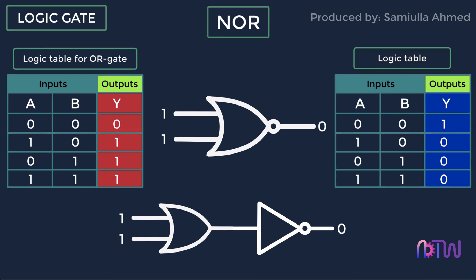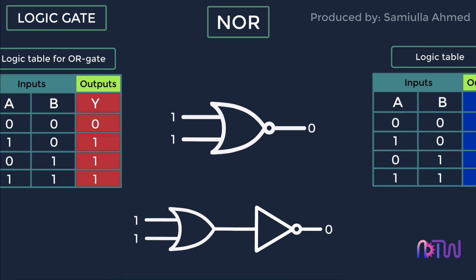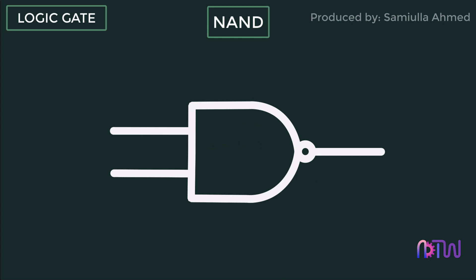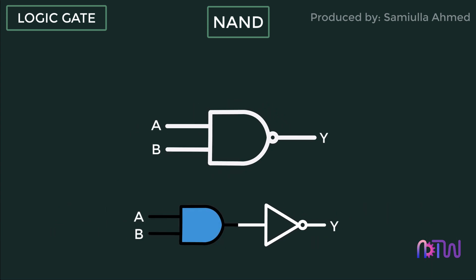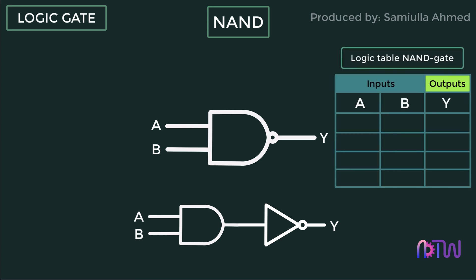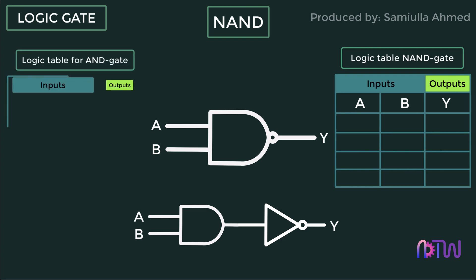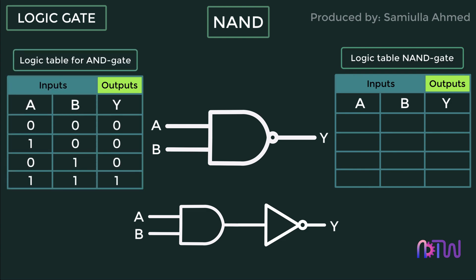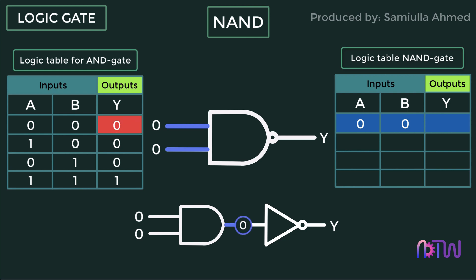Let's move on to the NAND gate. Just as the OR gate's output is passed through the NOT gate to get the opposite results, the AND gate's output is passed through the NOT gate to get opposite results of the AND gate. For the first inputs A equals zero and B equals zero, the output of the AND gate is zero; after passing through the NOT gate, the final output is one.